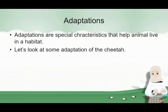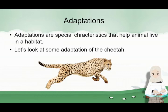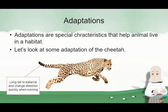For example, let's look at some adaptations of the cheetah. Here we have a pretty cheetah. It has a long tail to balance and change direction quickly when running.